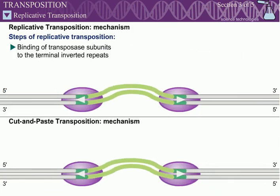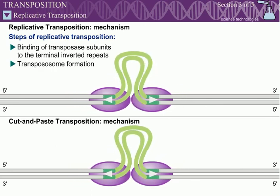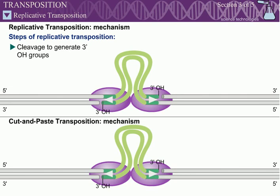Just as in cut-and-paste transposition, replicative transposition begins with the assembly of a transpososome. Next, the transposase subunits introduce nicks in the 3' ends of the transposon strands. However, in contrast to cut-and-paste transposition, the transposon DNA is not excised from its initial flanking DNA.